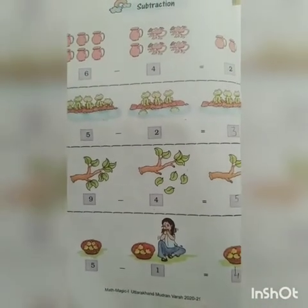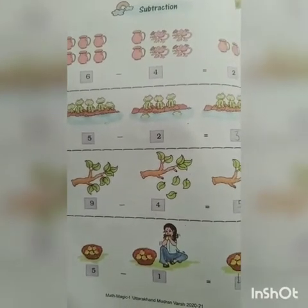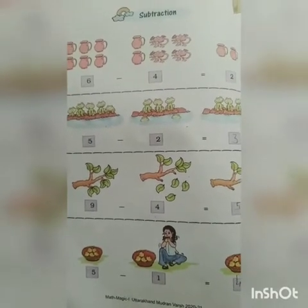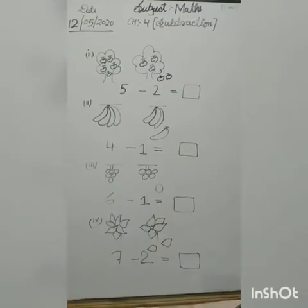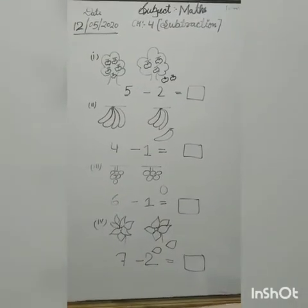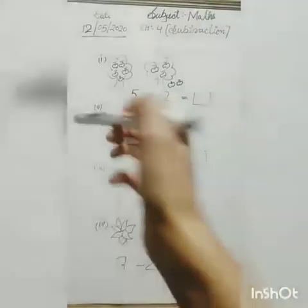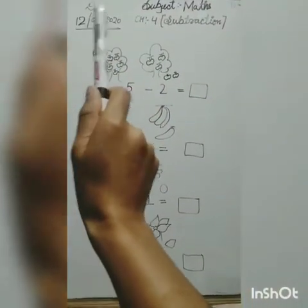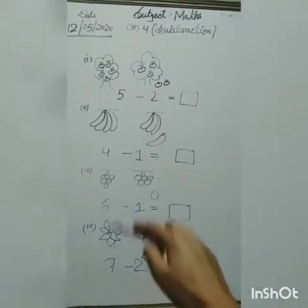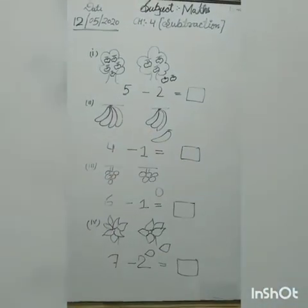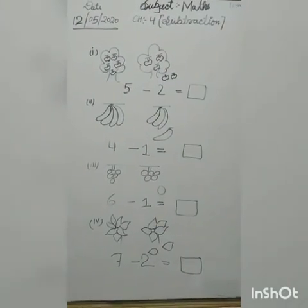Now we will do some subtraction on the board — you have to note it down in your notebook. Write the date: twelve, zero five, twenty twenty, and chapter four: Subtraction — Classwork. Then start from the first question.